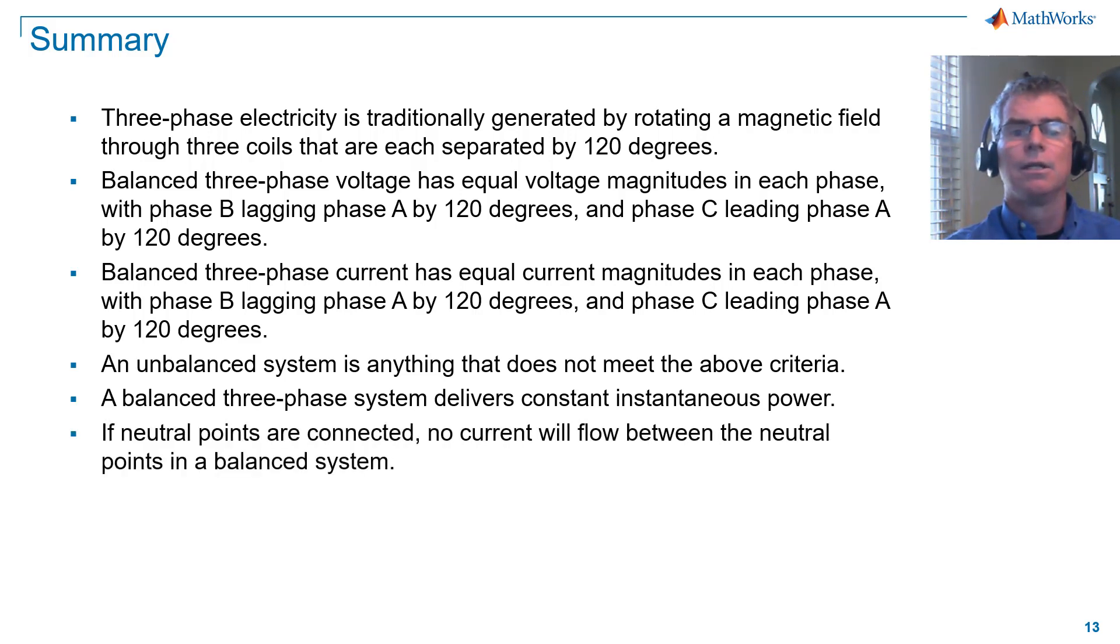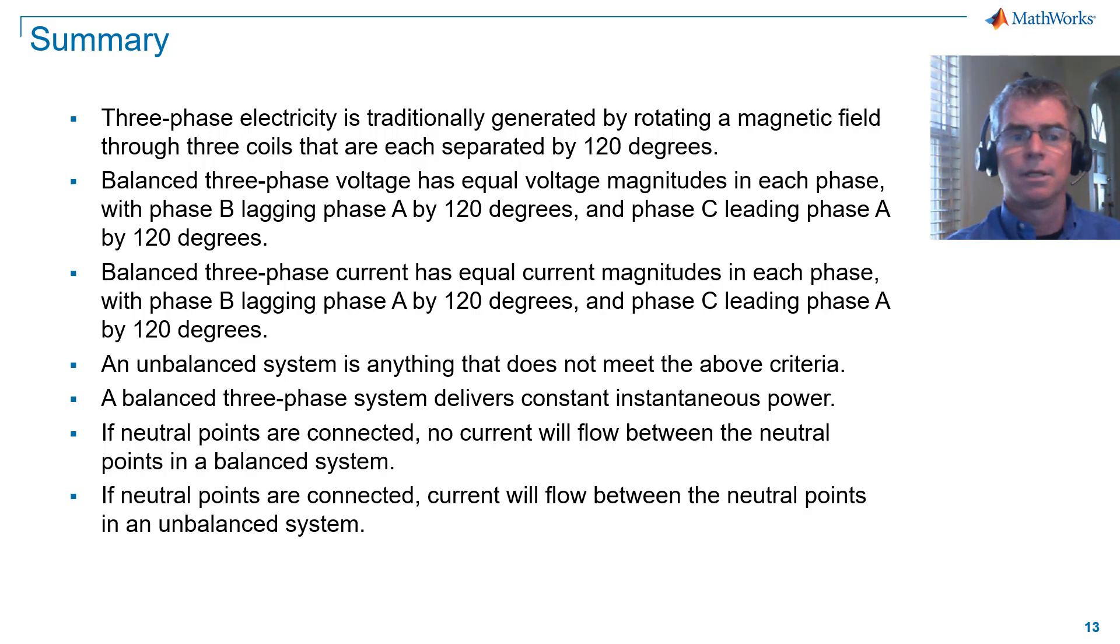If neutral points are connected, no current will flow between the neutral points in a balanced system. If neutral points are connected, current will flow between the neutral points in an unbalanced system.